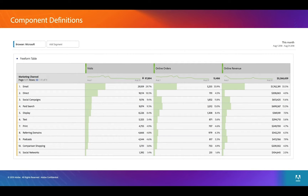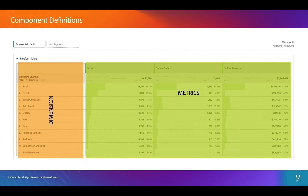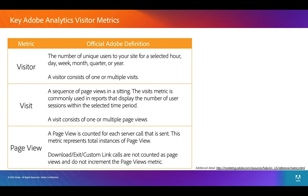Here's an example in the analytics interface where we're looking at a marketing channel report. We have the variable or variation, which is the marketing channel — email, direct, social campaigns, et cetera. But the numbers are how many visits, how many orders, how much revenue. Those are the metrics, those are the events. And the dimension is the conversion variable.